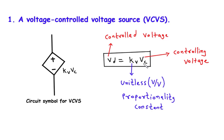The relationship between the controlled voltage VD and the controlling voltage VC can be expressed mathematically as VD equals KV asterisk VC. In this equation, K represents the proportionality constant. It is measured in volts per volt (V/V), and determines the sensitivity or gain of the VCVS.